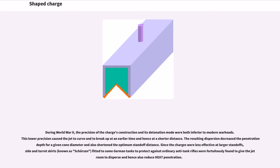During World War II, the precision of the charge's construction and its detonation mode were both inferior to modern warheads. This lower precision caused the jet to curve and to break up at an earlier time and hence at a shorter distance. The resulting dispersion decreased the penetration depth for a given cone diameter and also shortened the optimum standoff distance. Since the charges were less effective at larger standoffs, side and turret skirts known as Schürzen, fitted to some German tanks to protect against ordinary anti-tank rifles, were fortuitously found to give the jet room to disperse and hence also reduce heat penetration.